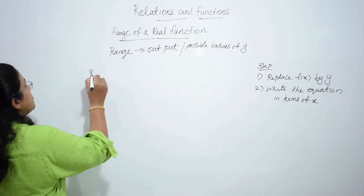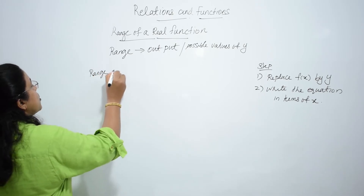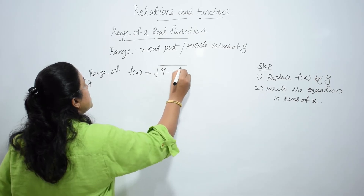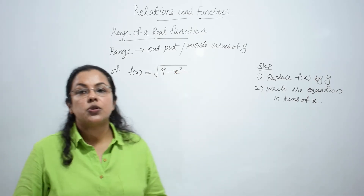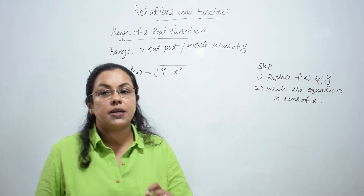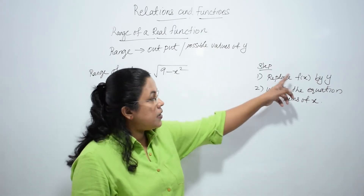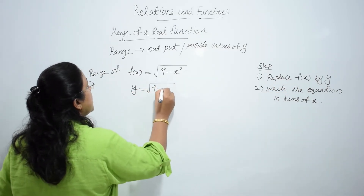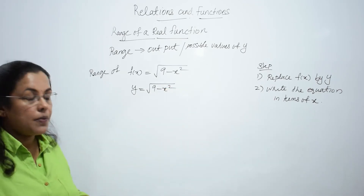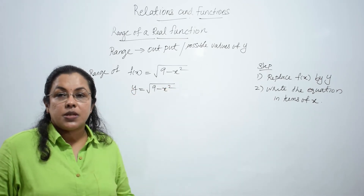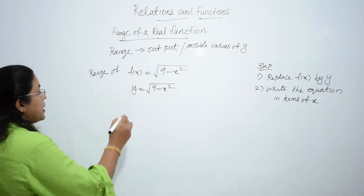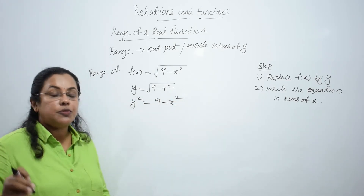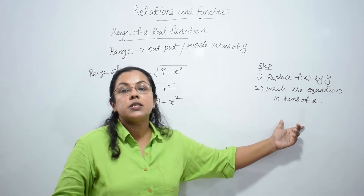Now look at the next question: find the range of f(x) = √(9 - x²). Step 1, replace f(x) by y: y = √(9 - x²). Now second step, squaring both sides, we get y² = 9 - x².